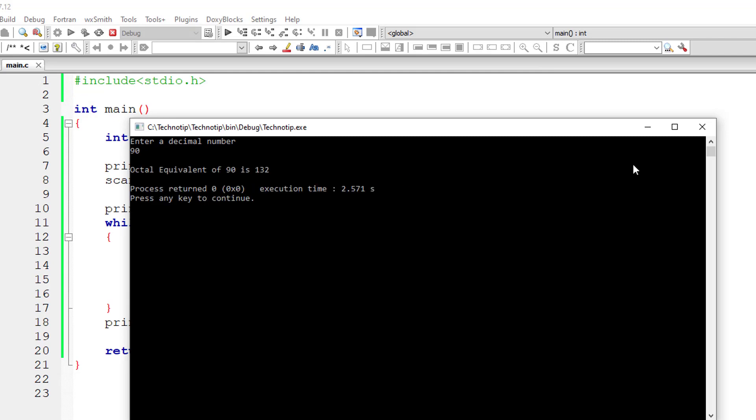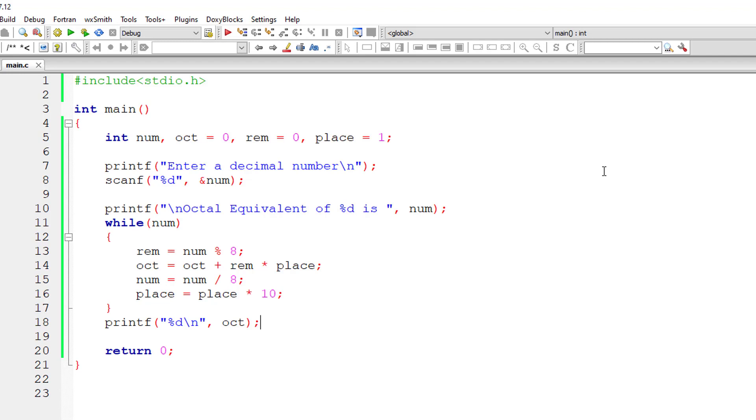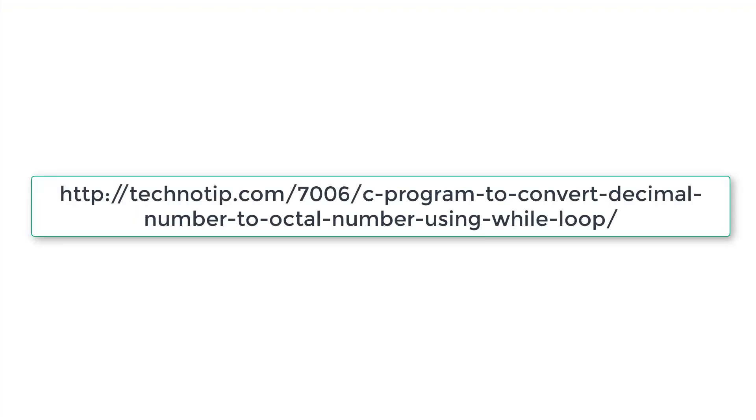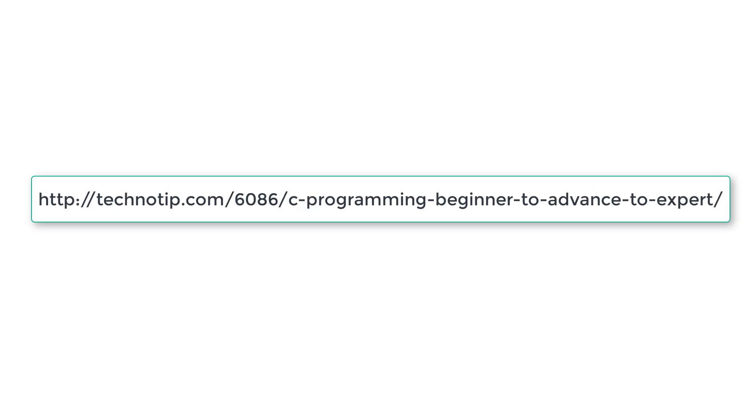Octal equivalent of 90 is 132. Please visit the link present in the description section of this YouTube video for source code, notes, and discussion about this topic. Please stay subscribed to our YouTube channel and blog, share this video with your friends online, and please do not forget to like this video on YouTube. Thank you.